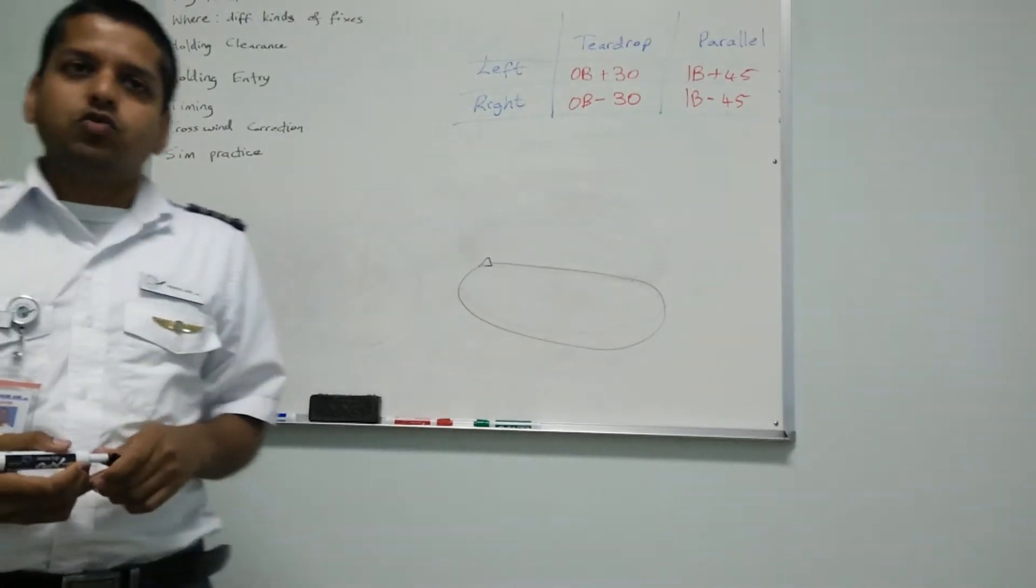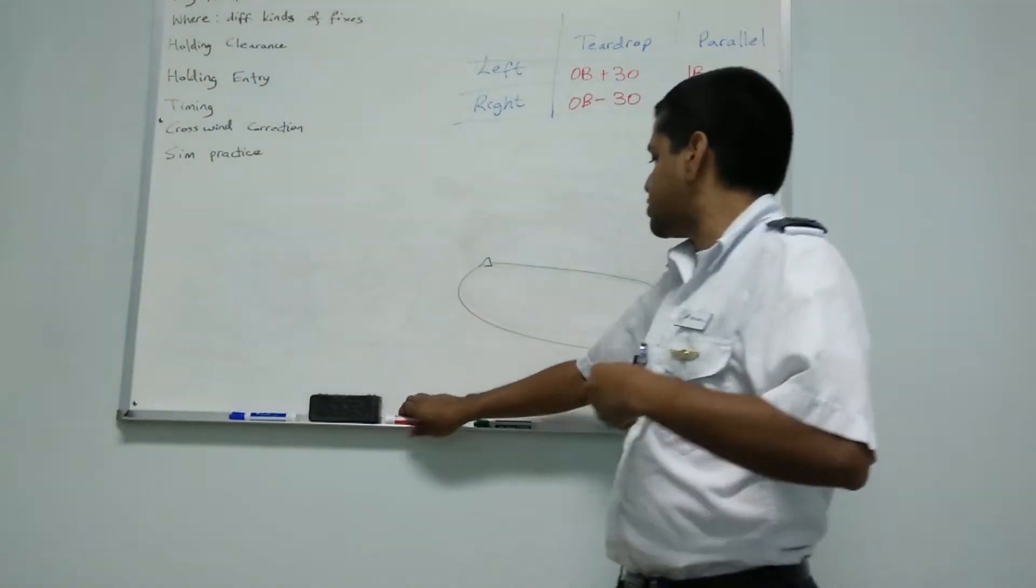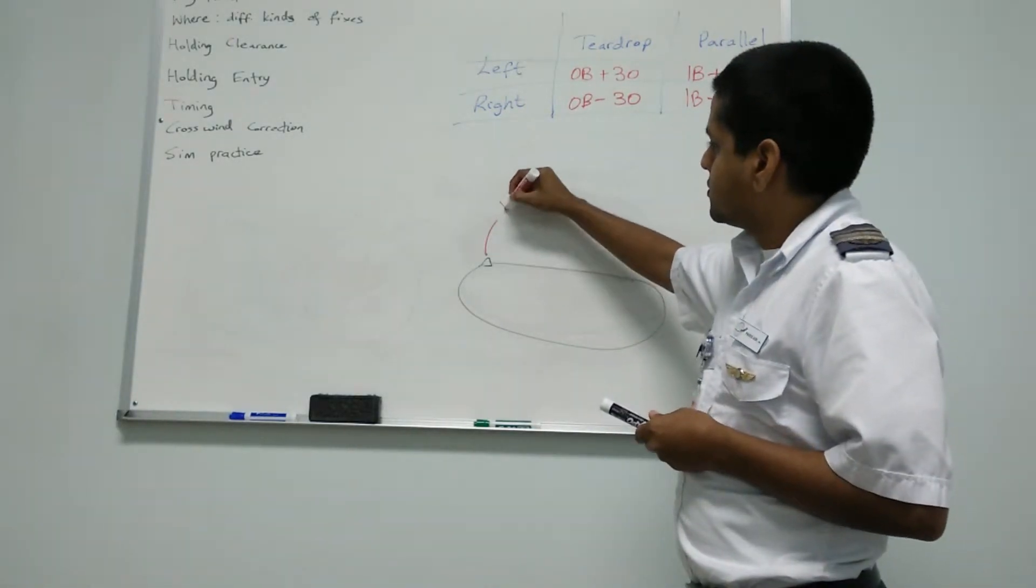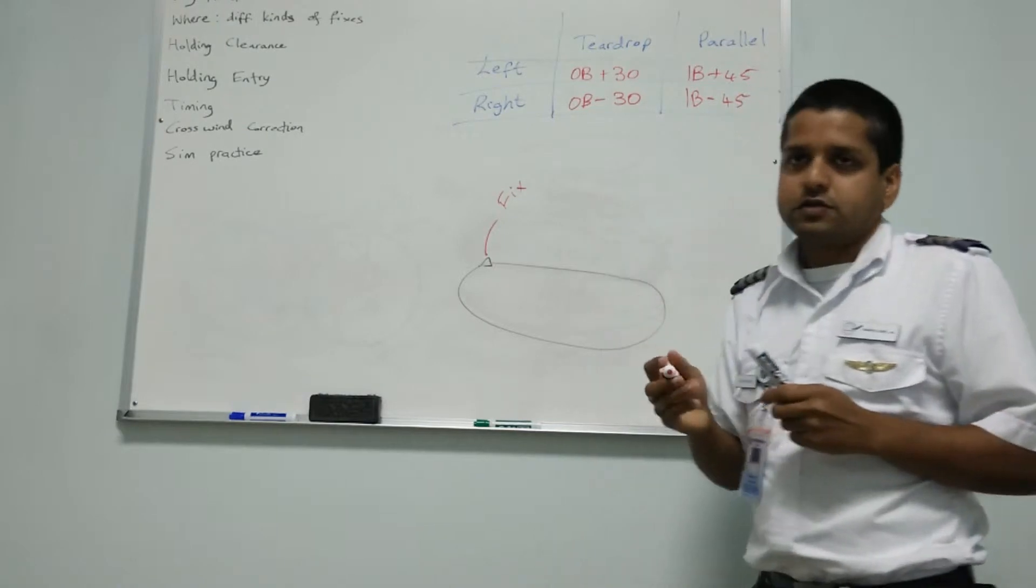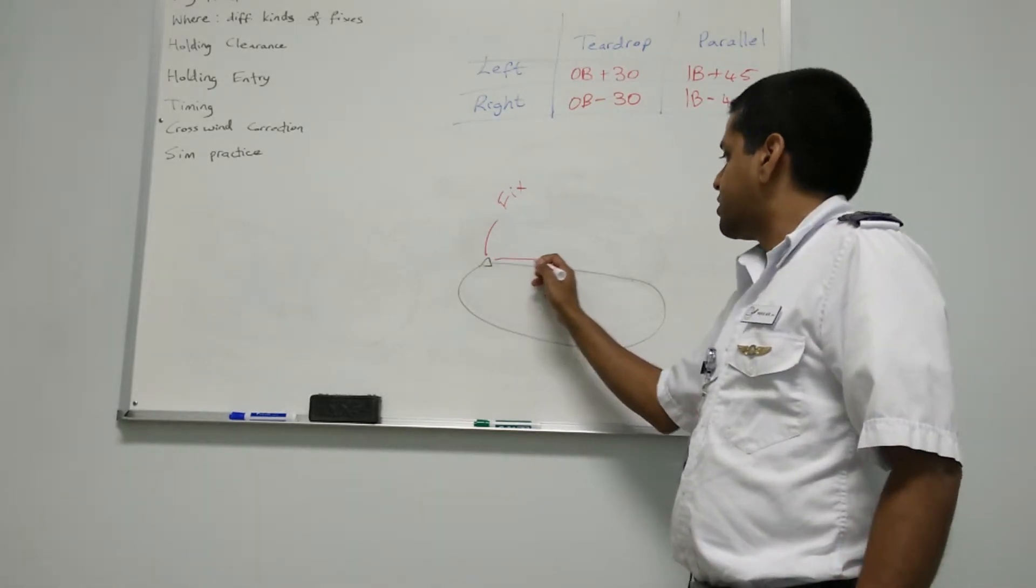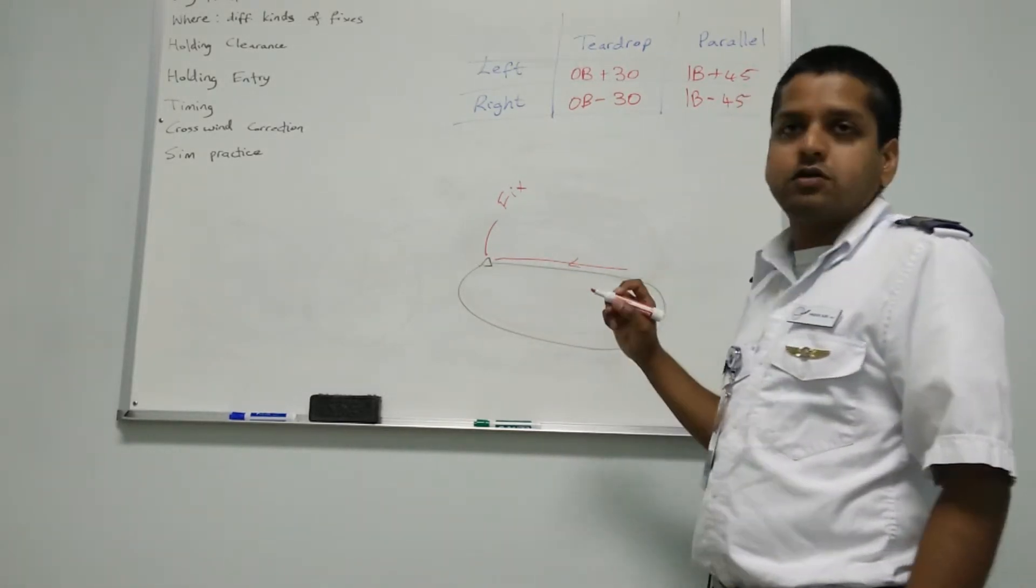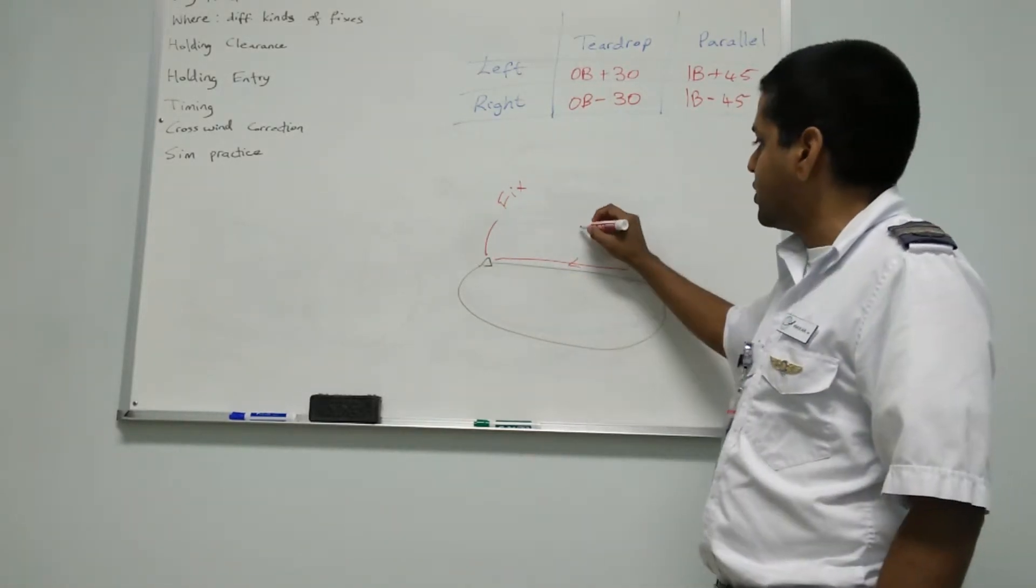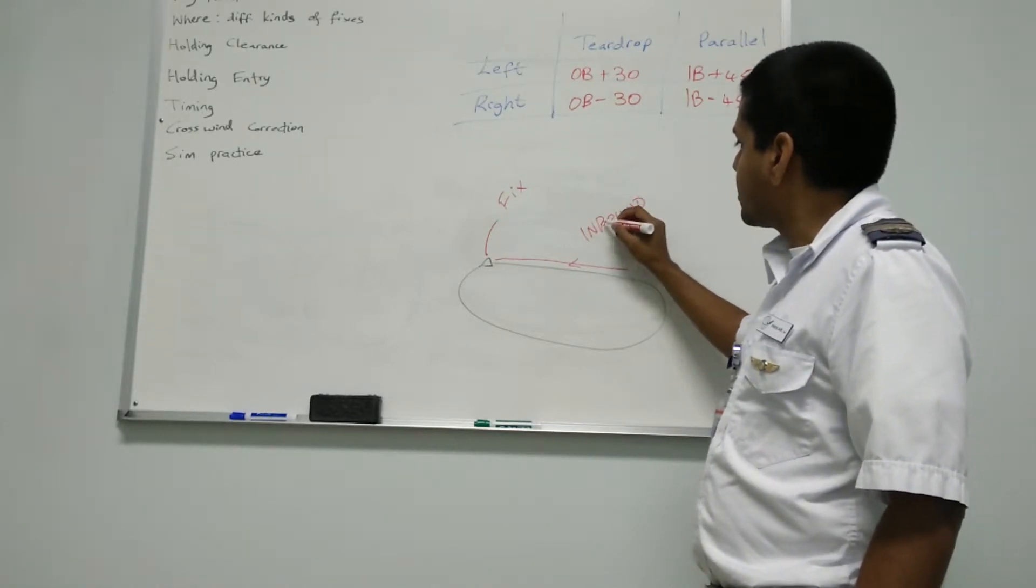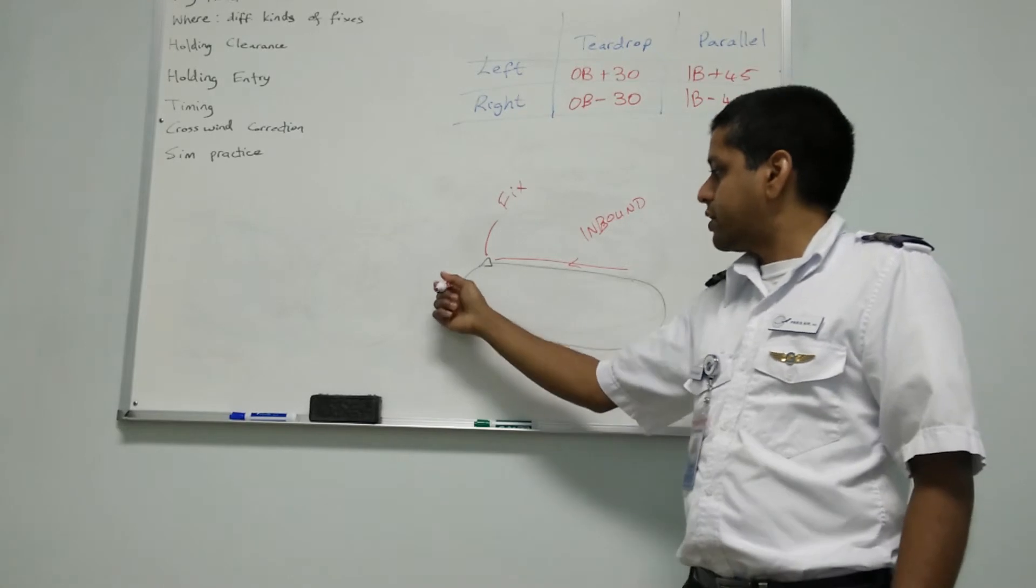You have different parts in the hold. You have your fix - this is your fix. You have your inbound and outbound legs. Your inbound leg, you are always flying to the fix. That's how you know it's your inbound leg. And your outbound leg, here you're going away from the fix.